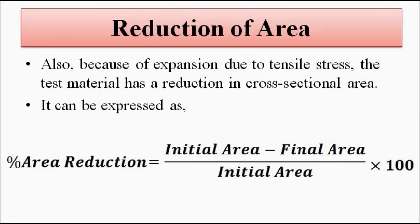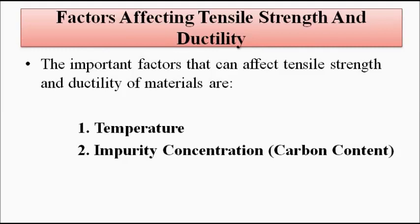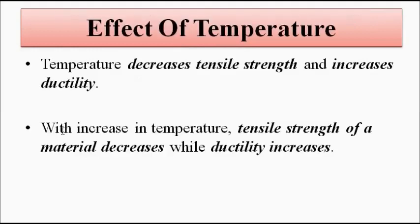The two main factors that affect tensile strength and ductility in engineering materials are temperature and impurity concentration. The impurity we are referring to is the concentration, or amount, of carbon in the material. Both of these factors can cause a change in tensile strength and ductility.